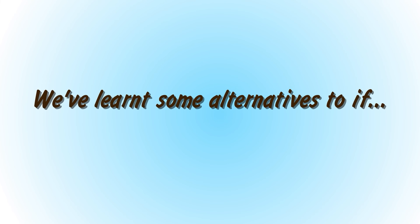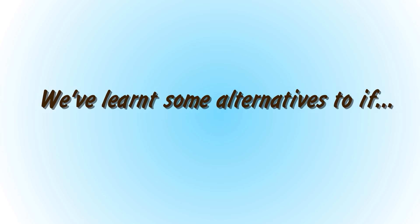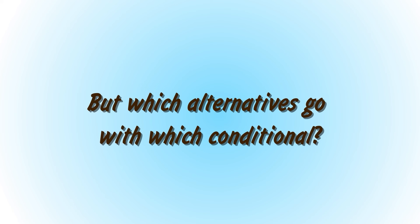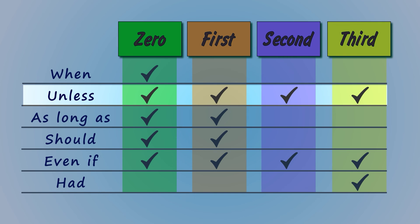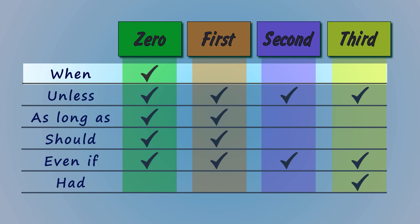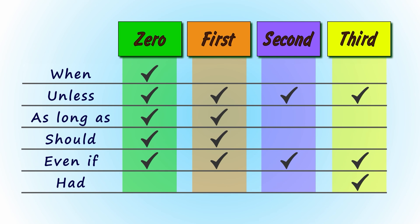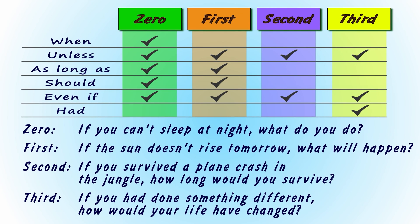So we've learned a few different alternatives to if, but you're probably wondering which alternatives can be used with which conditional, because some of them can be used in all the conditional tenses and some can't. For example, unless and even if can be used in any type of conditional, but when only really makes sense in the zero conditional. As always, there are exceptions to the rule, but this is a good basic guide. Let's practice — using the table, try and answer the questions below with a conditional and an alternative to if. Post your responses in the comments and I'll help you if they need correcting.